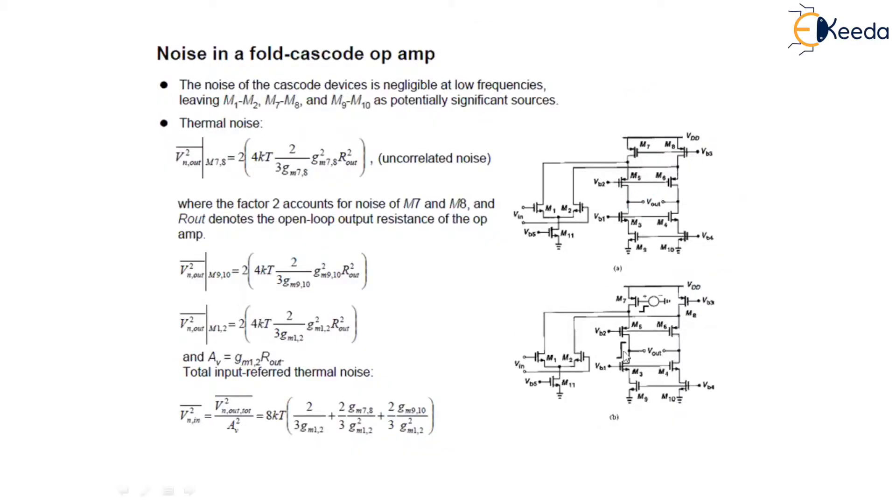The noise of cascode devices is negligible at lower frequencies, leaving only M1, M2, M7, M8, M9, and M10 as potentially significant sources.